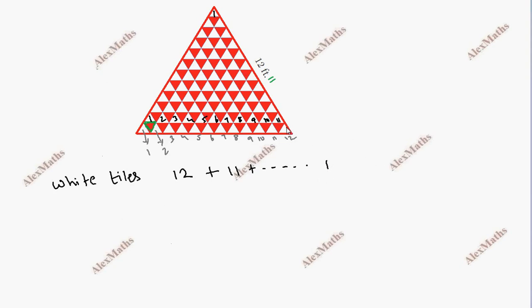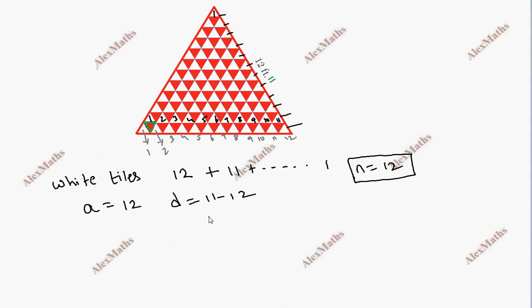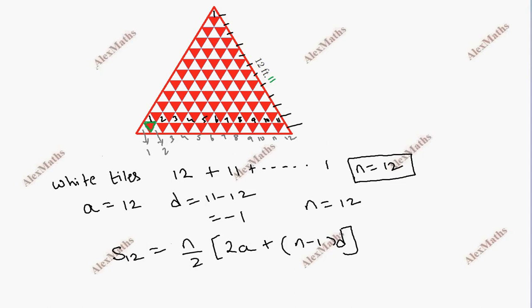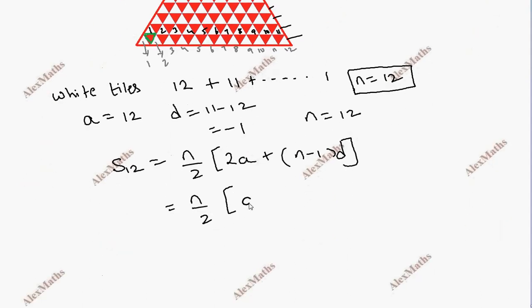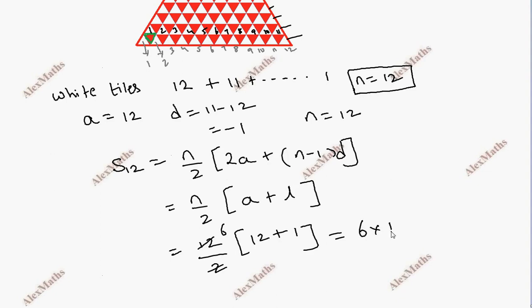Counting continues: 1, 2, 3, 4, 5, 6, 7, 8, 9, 10, 11, 12. For the white tiles arithmetic series: a = 12, d = 11 minus 12 = minus 1, n = 12. So S12 = 12 by 2 into first term plus last term. Last term is 1, total is 6 into 13, which gives 78. So the number of white tiles is 78.